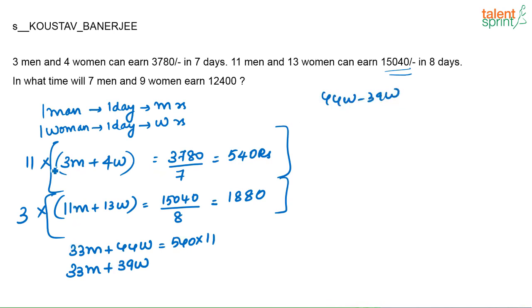Ideally in the examination, if I am doing this question, I will not write all this. I will just write one step. 44W minus 39W. Because I can do all this in my mind. This will anyway get cancelled. Why do I write it down separately? But I am writing it down here so that it is clear to all those of you who are watching the session. Some of you might be new to aptitude as well. So this will be 1880 into 3. Or what should I find out? 44W minus 39W. Subtract these two.